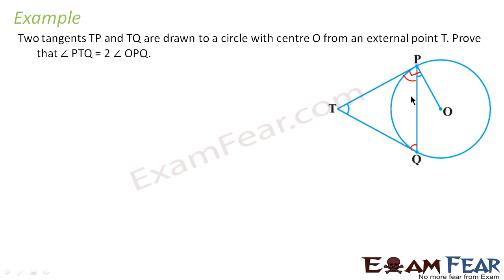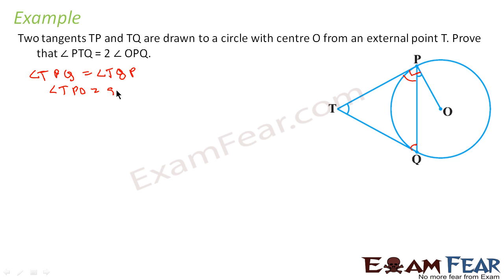Since TP equals TQ, that means angle TPQ will be equal to angle TQP. We know that angle TPO is 90 degrees. Now, let us assume that angle TPQ equals x, so angle TQP also equals x. Let us assume both are x.